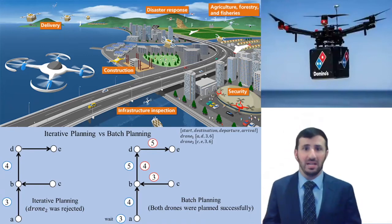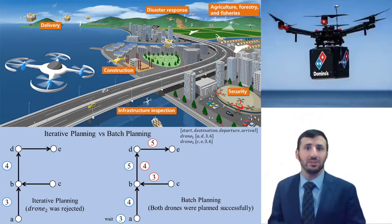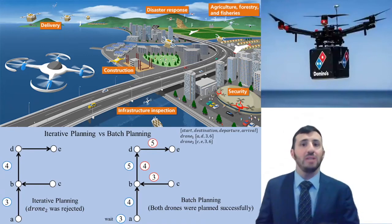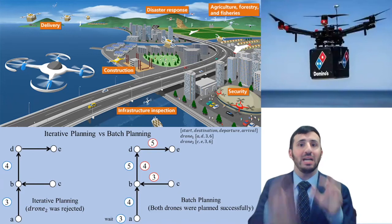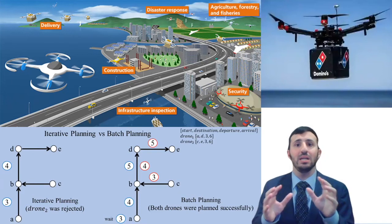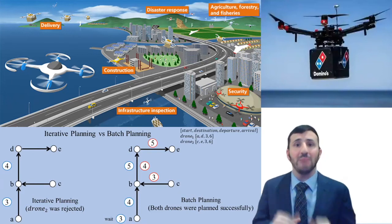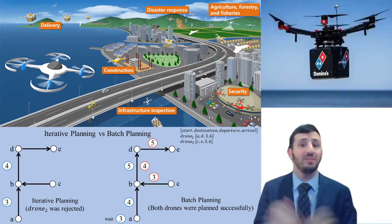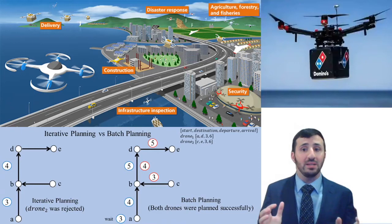Path planning is a fascinating problem in computer science. You take a starting point and a destination point, and on a given map, find the connection between the two through a set of midway points.